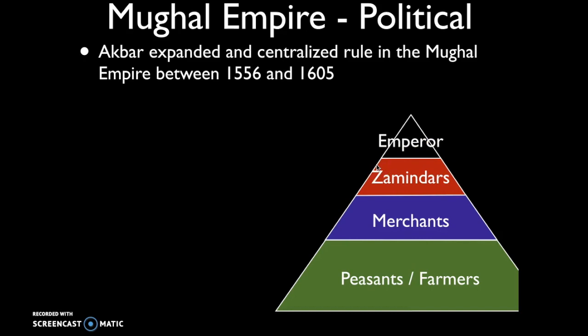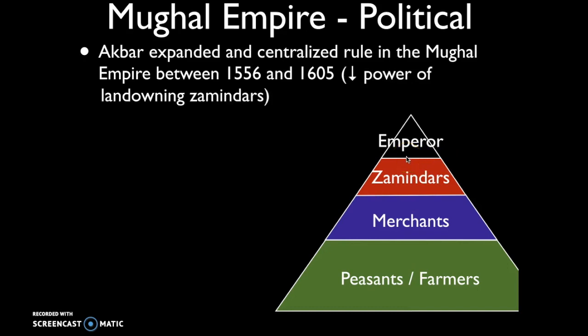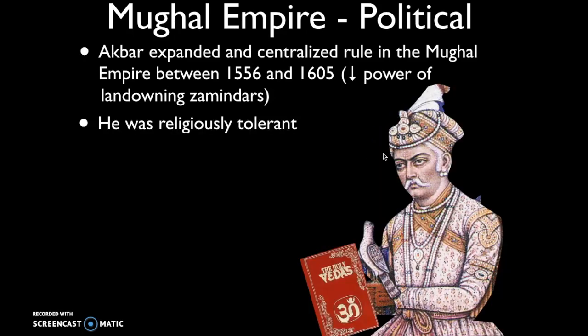As the Mughal Empire transitioned from a decentralized to a more centralized authority, the zamandars — these wealthy landowners — lost some of their power and status. We'll see this pattern in a number of other societies in Period 4, with a fluctuation in this class of elites. The diminishing power of zamandars occurred as power was increasingly concentrated in the hands of the emperor.